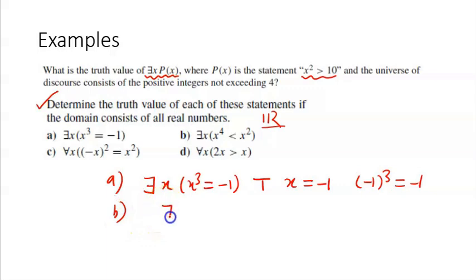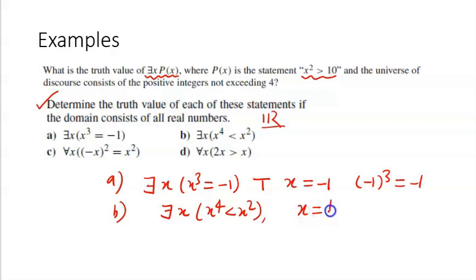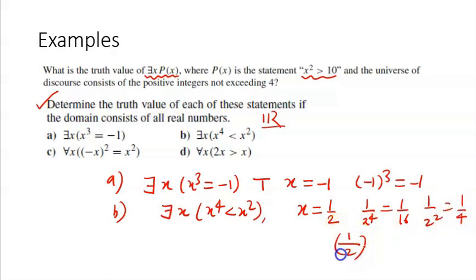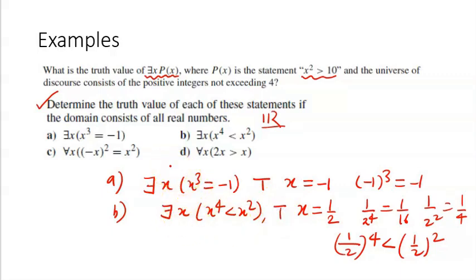The next statement: there exists x such that x⁴ < x². We can take x = 1/2. Then (1/2)⁴ = 1/16 and (1/2)² = 1/4. Certainly 1/16 < 1/4, so this statement is also true. We have found one value of x for which p(x) is true. There may be other examples, but the moment we find one, we should proceed — one value is sufficient.